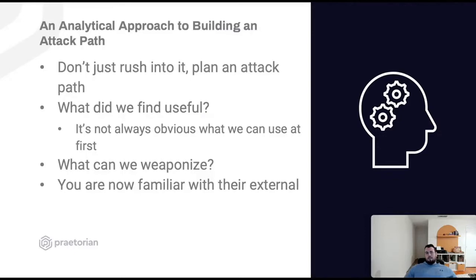Building an analytical approach to an attack path is really just a fancy way of saying: slow down, take your time, and actually plan something out instead of rushing into an engagement. By doing good OSINT and that initial external mapping, we can start to see what we can leverage and weaponize against them — are we seeing weird technology stacks, things that could be used as a pretext in phishing engagements, or other tidbits that could lead us to compromising users?